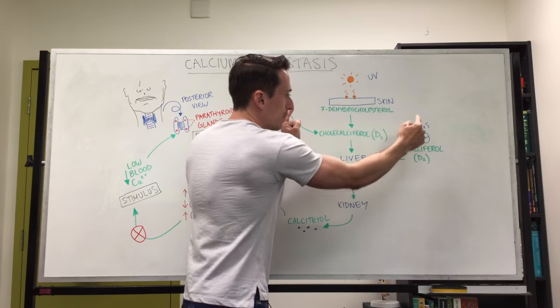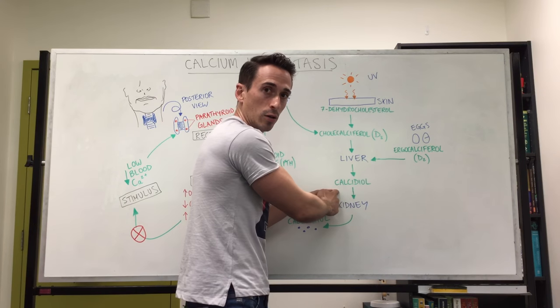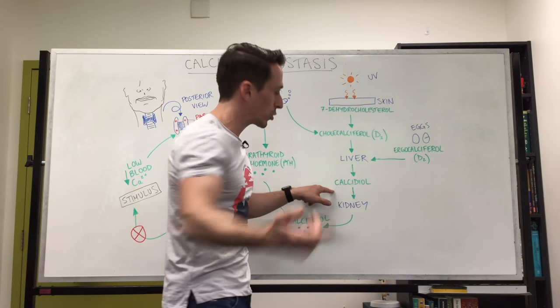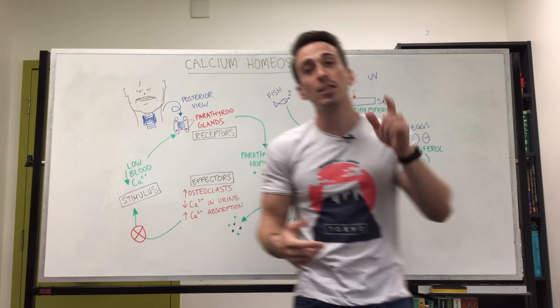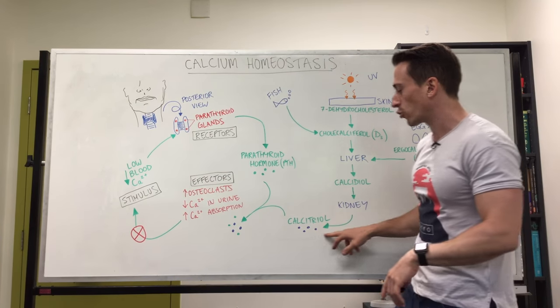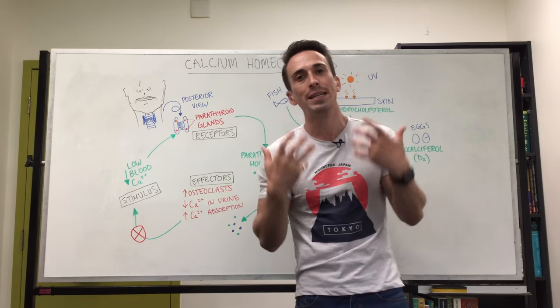Now the liver turns them both into calcidiol. Calcidiol again via our bloodstream goes to the kidneys and the kidneys turn it into calcitriol. This is the functional vitamin D.